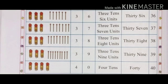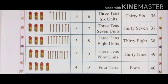Three bunches of math sticks means 30 math sticks. With 6 math sticks: 36. That is 3 tens and 6 units — 36. The spelling of 36 is T-H-I-R-T-Y (30) S-I-X (6): 36.